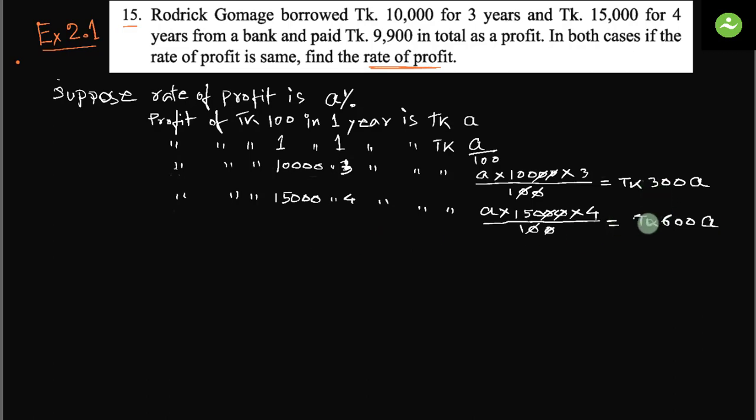Then the total profit will be 9,900. Then if we add these, total profit equals to taka 300a plus 600a.